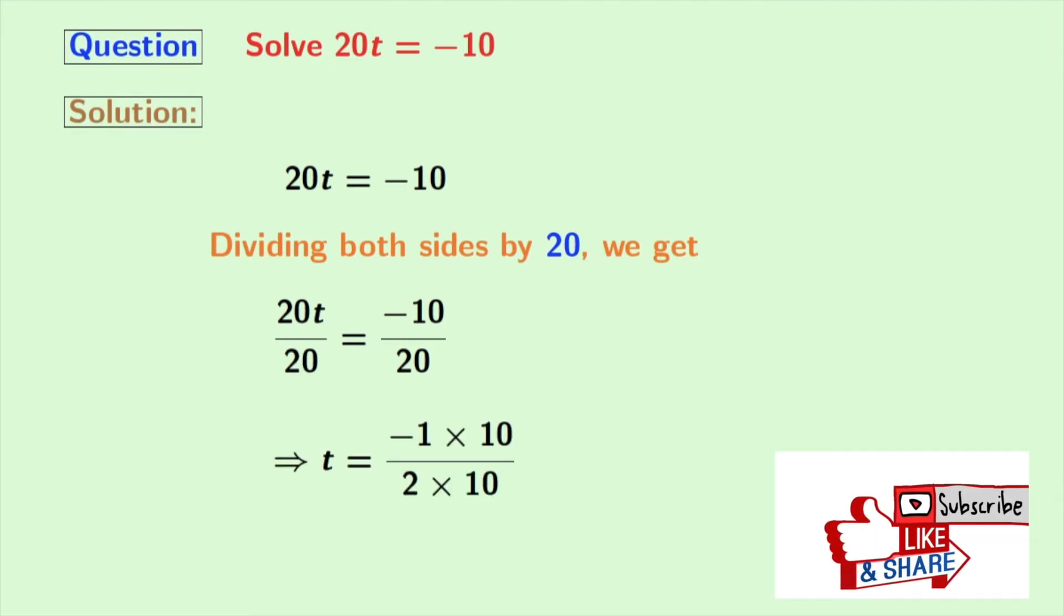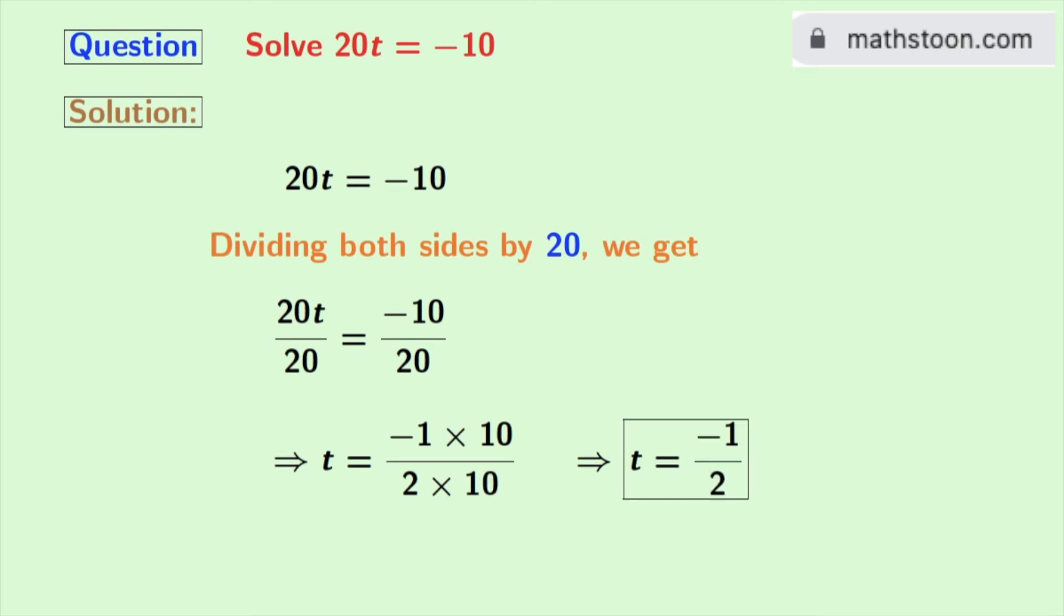And in the right-hand side, we will rewrite the numerator as minus 1 times 10. And in the denominator, we will rewrite 20 as 2 times 10. So 10 gets cancelled and we are left with minus 1 by 2.